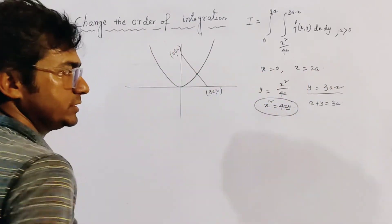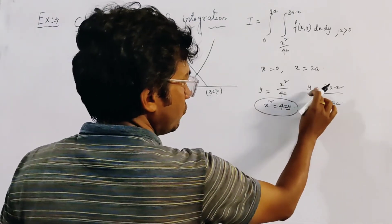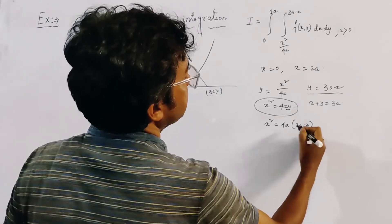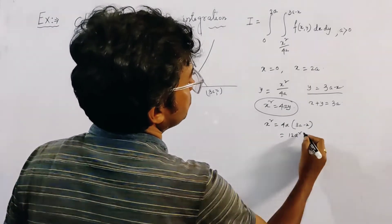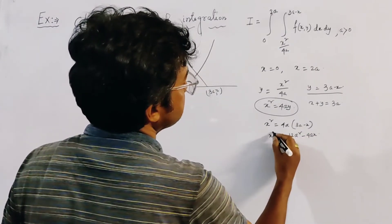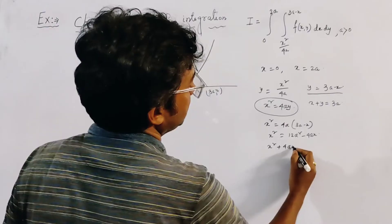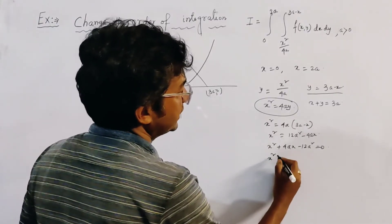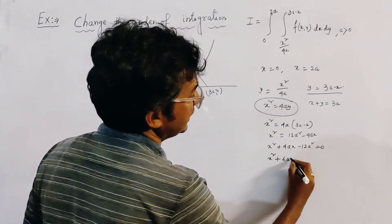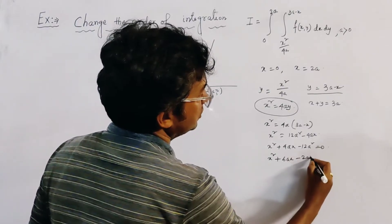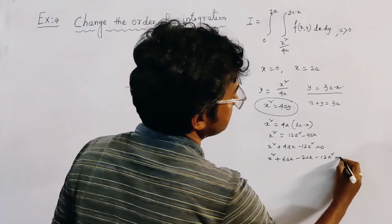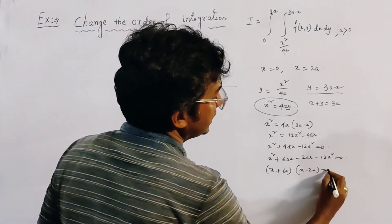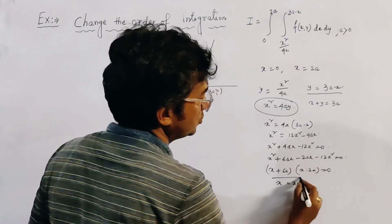We find the intersection point. Substituting y equal to 3a minus x into the parabola equation gives x squared equal to 4a(3a minus x), that is 12a squared minus 4ax. Rearranging: x squared plus 4ax minus 12a squared equal to 0, which factors as (x plus 6a)(x minus 2a) equal to 0, giving x equal to 2a.